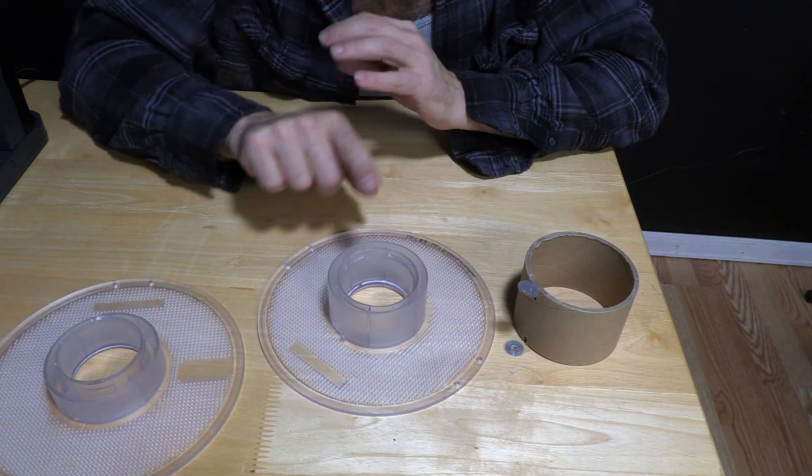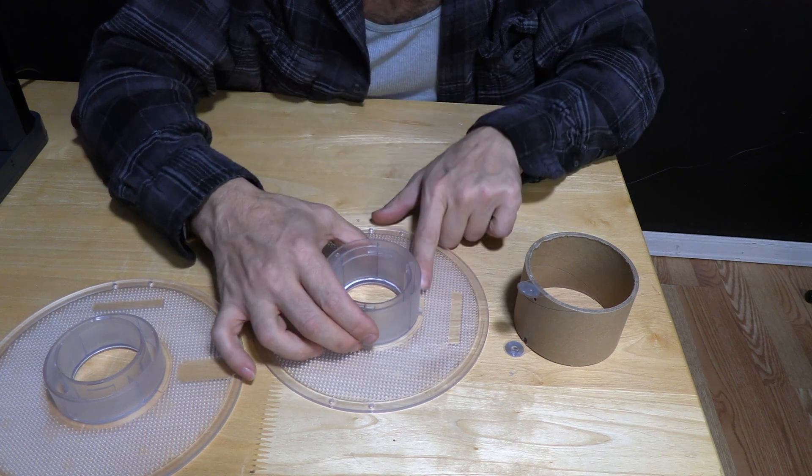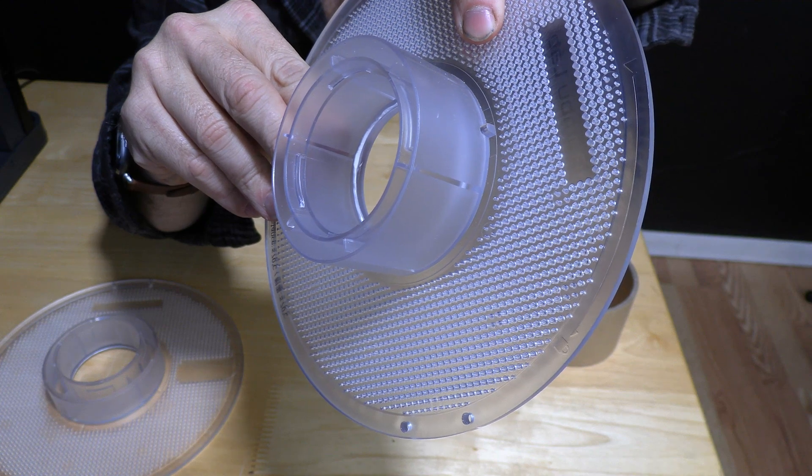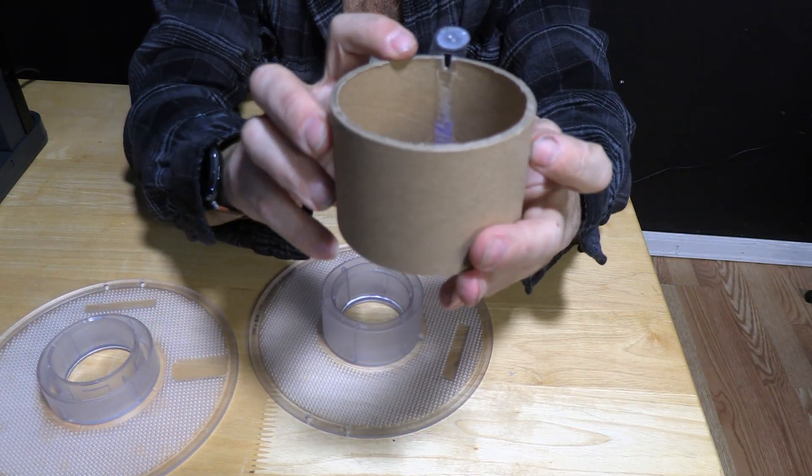This is the important part. You will notice on the longer section of the spool there is a notch. If you look at your filament refill core you will notice there is also a notch.